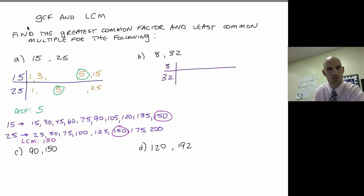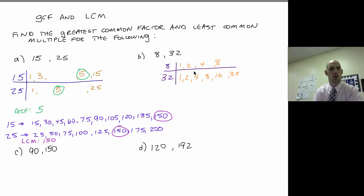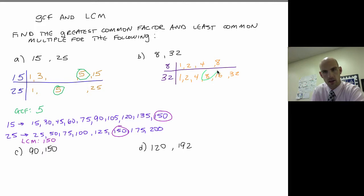For 8: factors are 1, 8, 2, and 4 — four factors total. For 32: 1 and 32, 2 and 16, 4 and 8. You can see how they work toward the middle and when they meet up, you're done. Looking at what's common — 4 is common, but 8 is my greatest common factor.